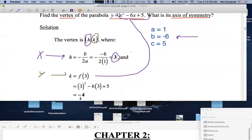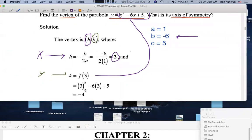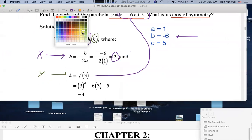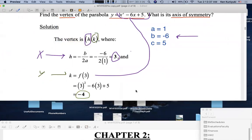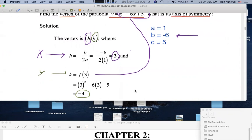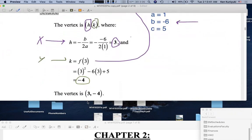And we get negative 4. The y-coordinate, or k, is given by negative 4. Now, remember, you have to write your final answer as an ordered pair. The vertex is given by the ordered pair 3 comma negative 4.